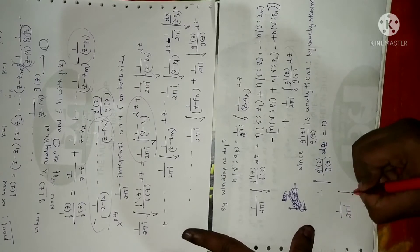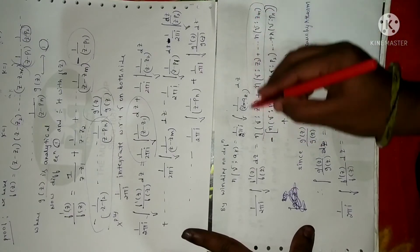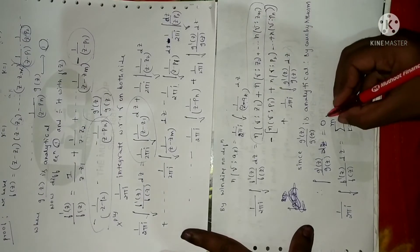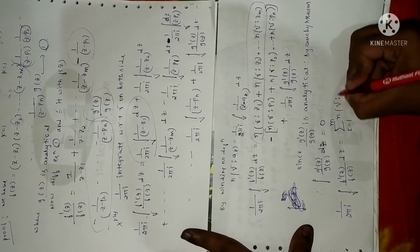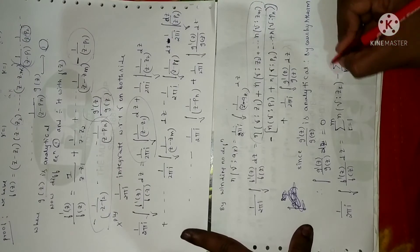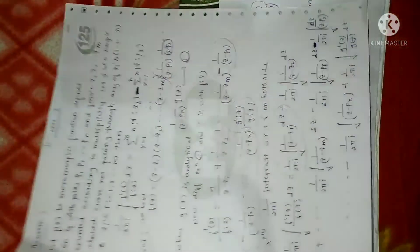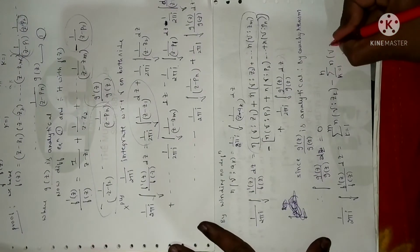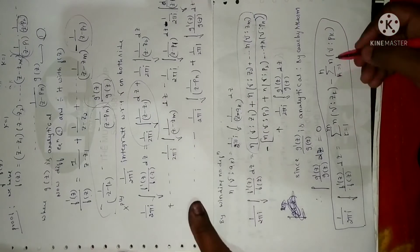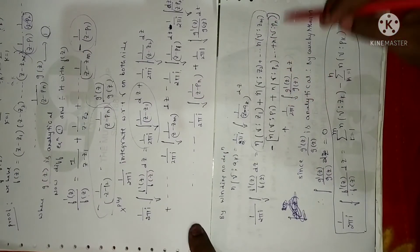Therefore (1/2πi) ∫_γ f′(z)/f(z) dz equals the summation from k=1 to m of n(γ, zₖ) minus the summation from k=1 to n of n(γ, pₖ). Hence the proof is complete — the integral of f′/f over gamma equals the difference of winding numbers of zeros and winding numbers of poles.